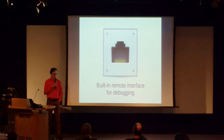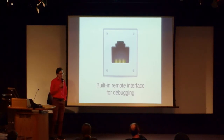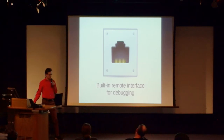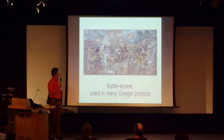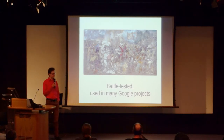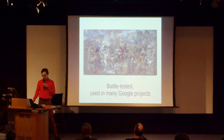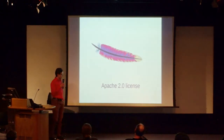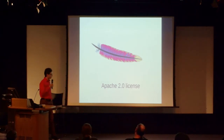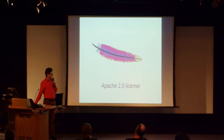It has a pretty extensive remote interface for debugging, which I'll show in a minute. It's already used in the wild, battle-tested, and used in many Google projects, so the chances of it going away are very, very small. And it's available under the Apache 2.0 license, which is compatible with GPL version 3, so there should be no licensing problems in using it with open source projects.